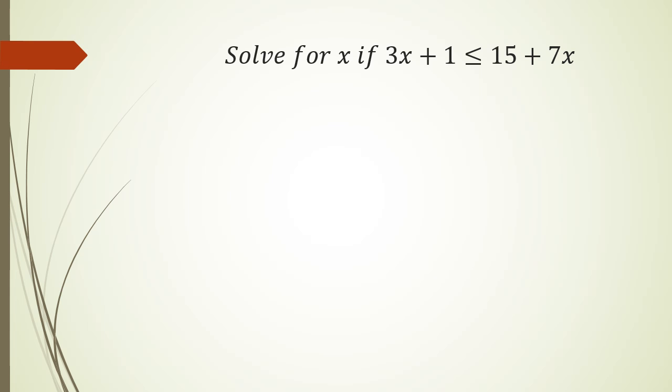So here's a second problem with inequalities. We're going to do 3x plus 1 is less than or equal to 15 plus 7x. Again, same rules. So I'm going to shift the 7x to this side, which means it will become minus 7x plus 1 is less than or equal to 15. We've got negative 4x plus 1 is less than or equal to 15.